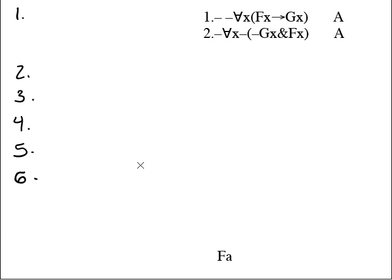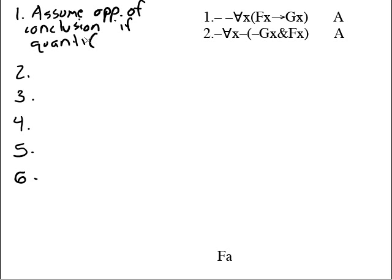What is the first step of that method? Well, the first step is actually to look at the conclusion and see if it's quantified. Is our conclusion quantified? Obviously it's not. What would it mean to be quantified? It'd either have an upside-down capital A or backwards capital E. It doesn't have that and therefore we are not going to assume the opposite. The first step says assume opposite of conclusion if quantified. Conclusion is not quantified so we're not going to do it. That's all there is to it.